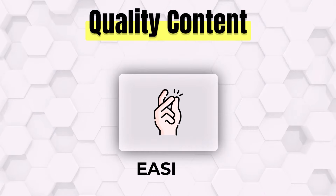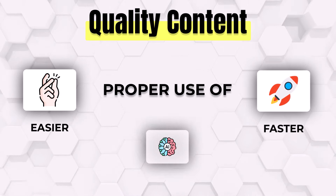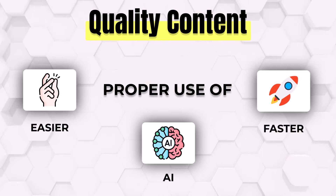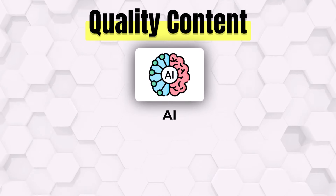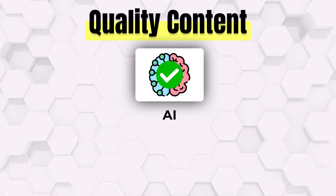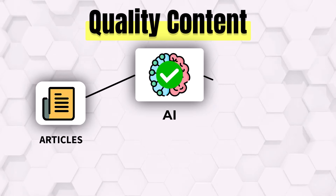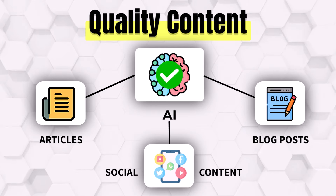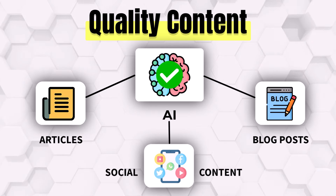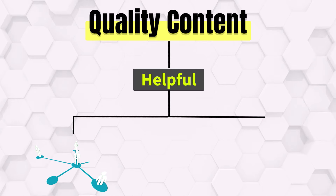Do you know that writing quality content is much easier and faster with the proper use of AI? But the problem is how to use AI correctly for your writing projects such as articles, blog posts, social content and so on, and make your content helpful for the people.